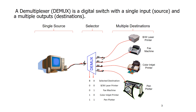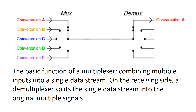You may have noticed that the multiplexer, abbreviated MUX, uses the same symbol as the demultiplexer but flipped. They're both trapezoids. The multiplexer had multiple inputs and a single output. The demultiplexer, abbreviated DEMUX, has a single input and multiple outputs, and you can select where that input should go among a bunch of different destinations.